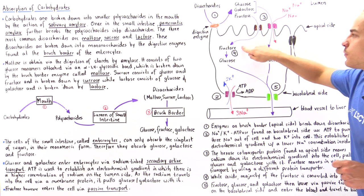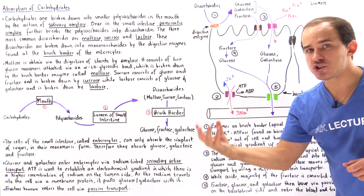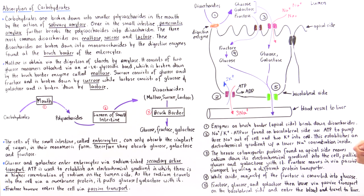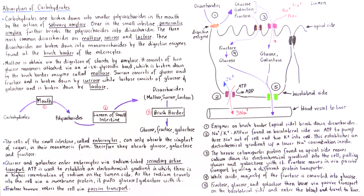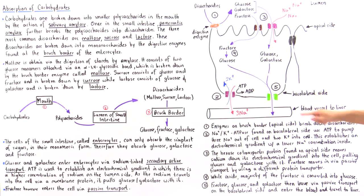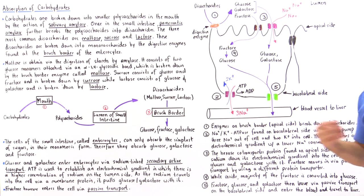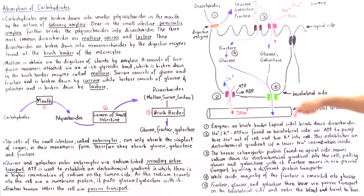When fructose is inside, the majority of fructose is transformed into glucose. Fructose, glucose, and galactose then leave the cell via passive transport on the basolateral side, not using any ATP energy molecules.